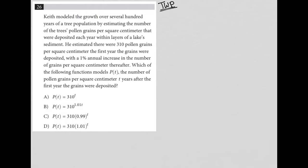The question starts off by saying Keith modeled the growth over several hundred years of a tree population by estimating the number of trees' pollen grains per square centimeter that were deposited each year within layers of a lake's sediment.